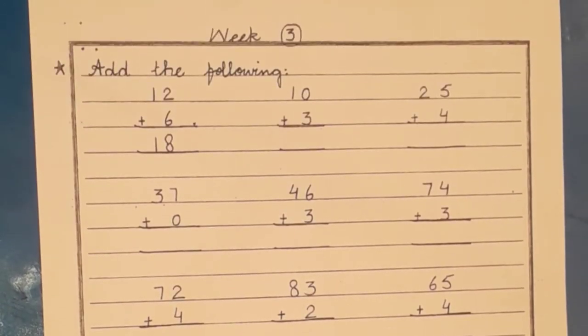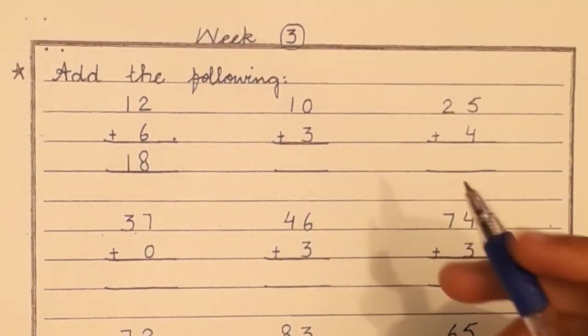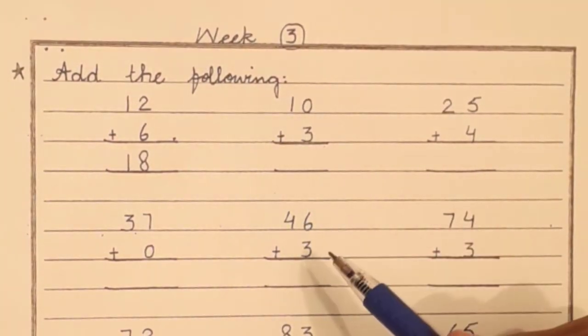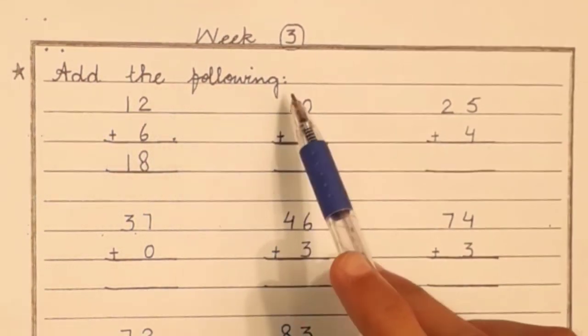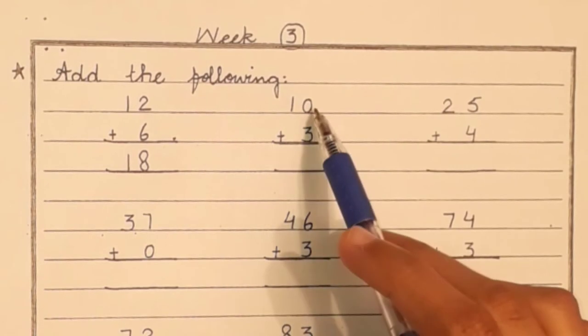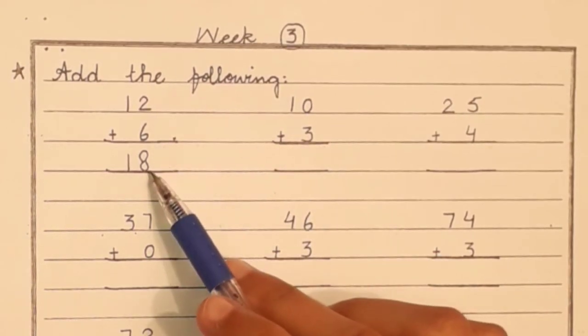Next, we will learn to add. We have to arrange the numbers vertically. You have to write here. There is a statement. Add the following. First, we have to arrange the numbers vertically. As an example, you have to arrange the numbers. First question solved.